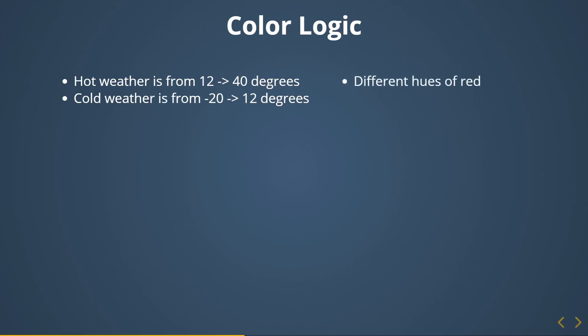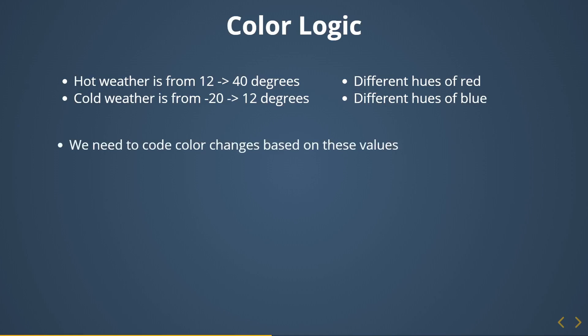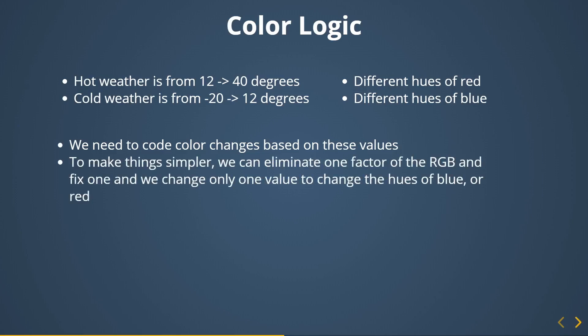For hot weather, I'm going to use different hues of red. If it's really hot, it's a very reddish gradient; if it's not that hot, it becomes less reddish. Same thing with cold weather — it's different hues of blue; the colder it is, the brighter the blue. So we need to code color changes based on these values, and we need a logical formula that, given a temperature, outputs different shades of red or blue.